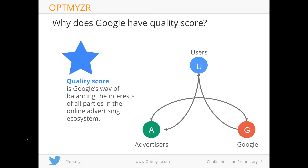Google said there's got to be a better way — some metric that aligns the incentives of the three parties: users, advertisers, and Google (or other publishers). If we can show more useful ads that actually answer a user's question, then the user will be happy and more likely to click. If they click because they're really interested, the advertiser has a chance to get a new customer, and Google makes more money by selling those ads for more.